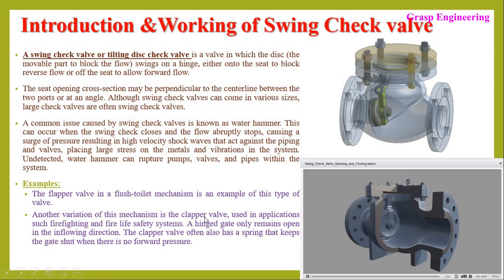Another variation of the swing check valve is the clapper valve, used in applications such as fire fighting and fire life safety systems. A hinge gate only remains open in the in-flowing direction, and the clapper valve often also has a spring that keeps the gate shut when there is no forward pressure. The disc moves up with fluid flow and moves down due to gravity, with the spring arrangement restricting movement of the disc.